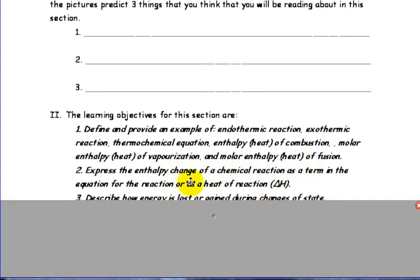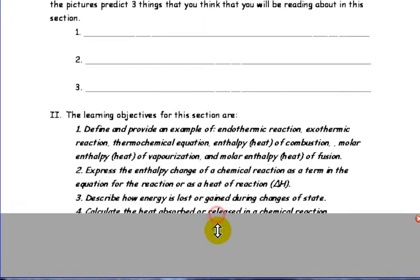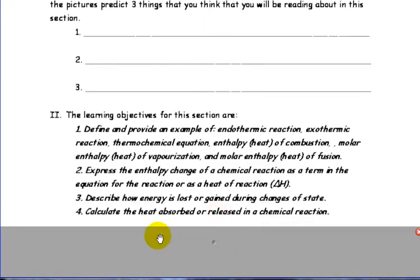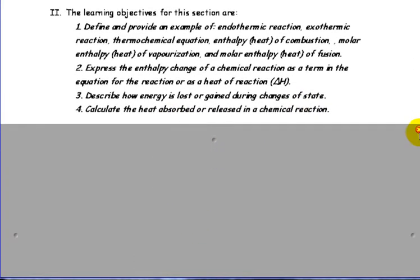We'll be looking at expressing the enthalpy change as a reactant in the equation or off to the side as a delta H number. We'll look at how energy is lost or gained during a change in state and also chemical heat absorbed or released in a chemical reaction.